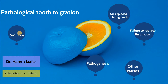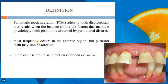Starting from definition. The pathological tooth migration refers to tooth displacement that results when the balance among the factors that maintain physiological tooth position is disturbed by periodontal disease. It most frequently occurs in the anterior region, but posterior teeth may also be affected.